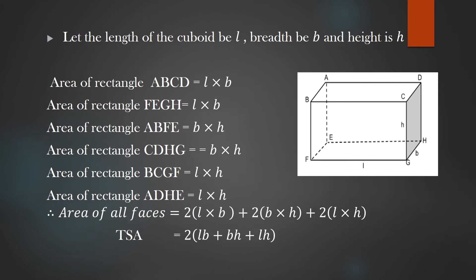Let us find the total surface area of a cuboid. Let l be the length, b be the breadth, and h be the height. We need to find the area of all six faces and add them. The area of the top and bottom faces (ABCD and FEGH) is l × b each. The area of the side faces (ABFE and CDGH) is b × h each. The area of the front and back faces (BCGF and ADHE) is l × h each. Therefore, total surface area = 2lb + 2bh + 2lh, which simplifies to 2(lb + bh + lh).